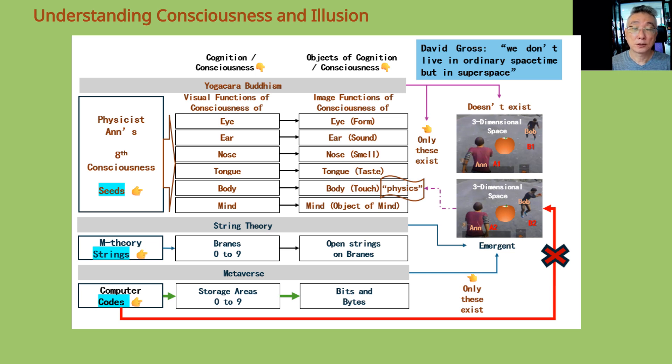To Yogacara Buddhism, those objects seem to exist, but they don't exist. For example, our ability to see is not with our eye organs, which is only an illusion, as explained in the Mind-Body Theory episode.